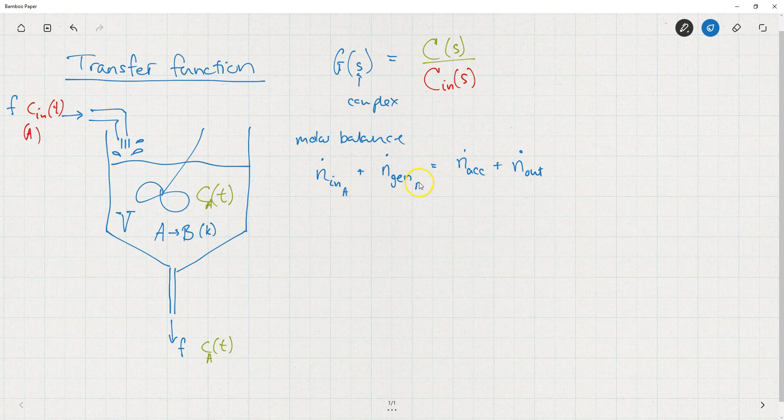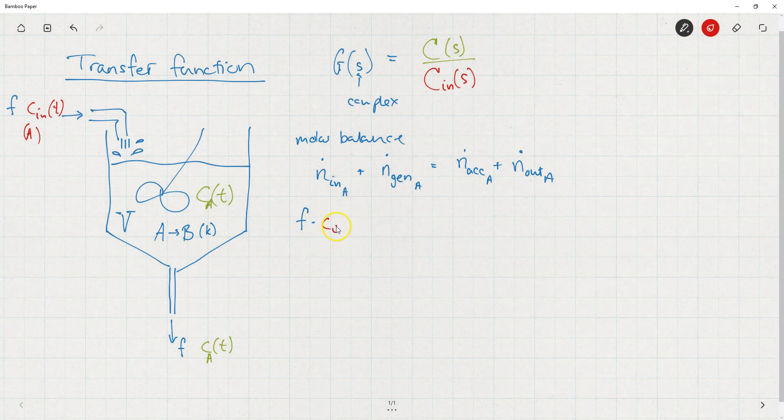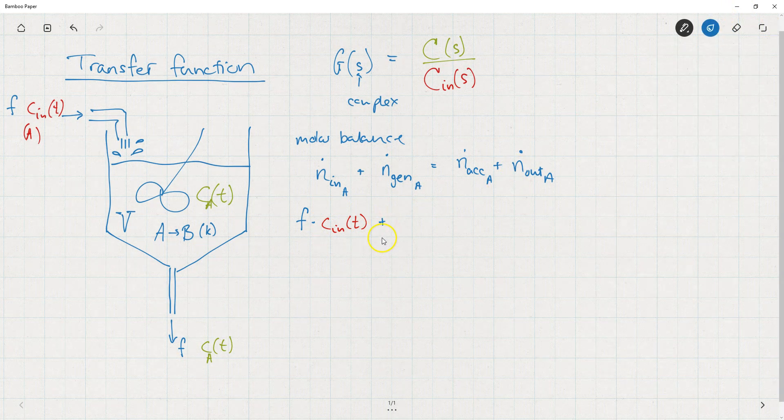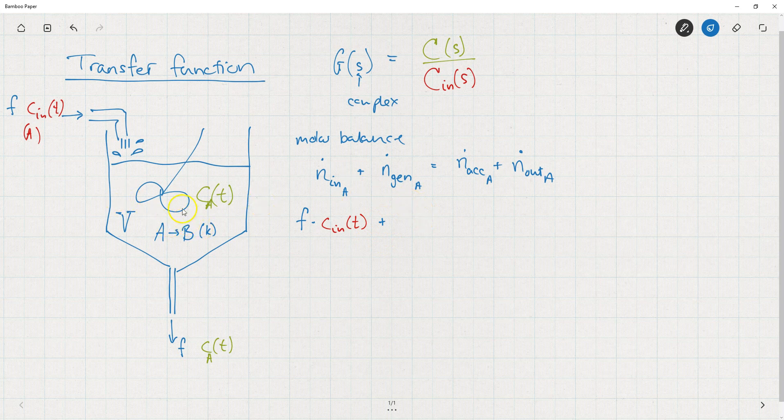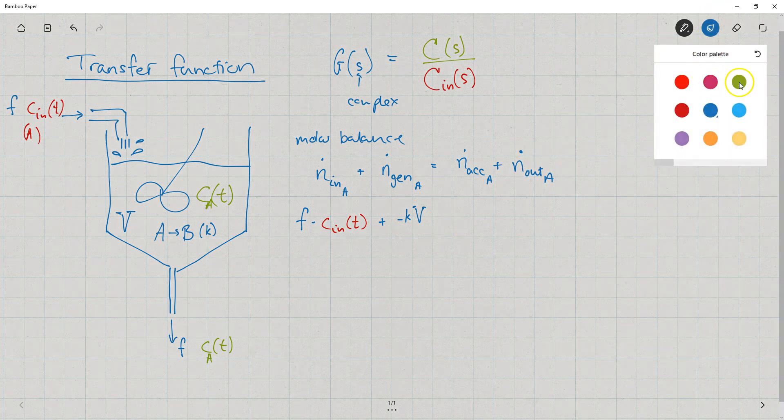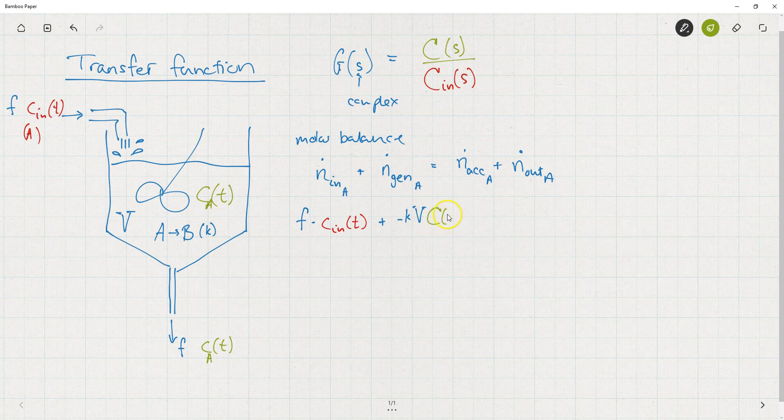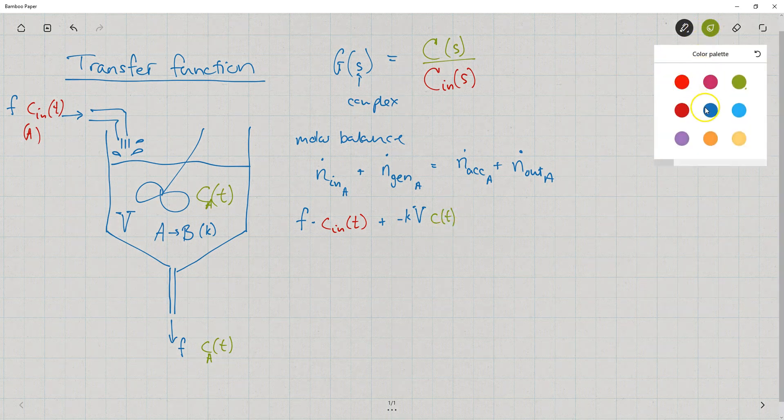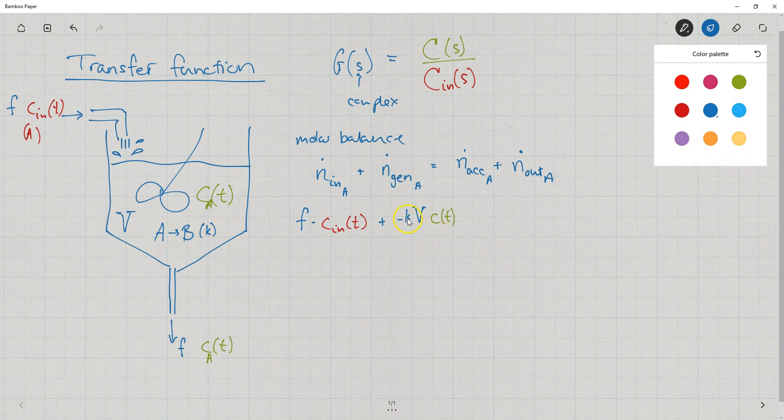That's F times the input concentration, C_in of T. And what is generated? Actually, A disappears in the reactor because it's turned into B. So we have minus K times V times the concentration, that would be C, not capital C, just regular C here. Assuming that it's a first order reaction taking place in here, and K is the reaction constant.